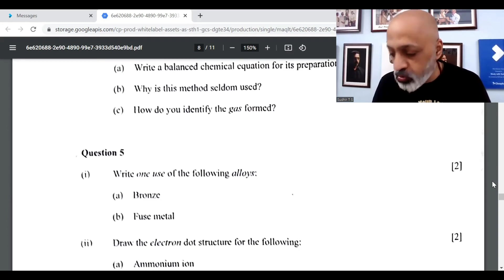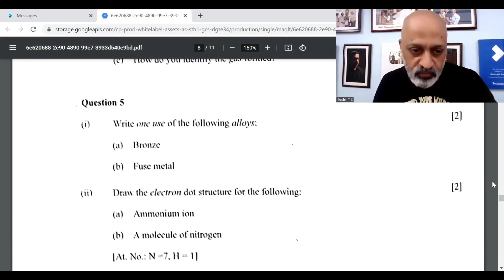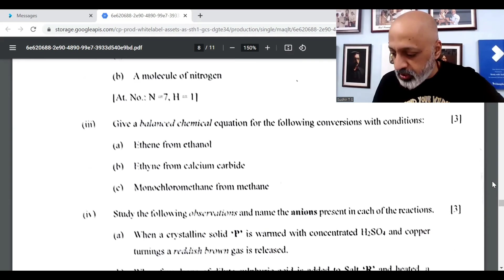Let's move to question number 5. Write one of the following uses: bronze is used for making medals in different events. Fuse metal for soldering. Then we'll skip the second one, electron dot structures and the balanced equation.